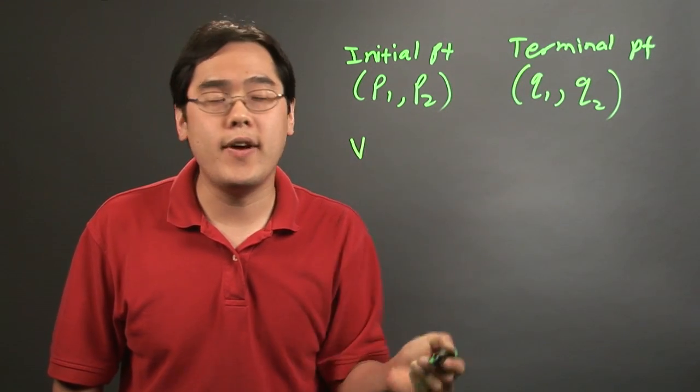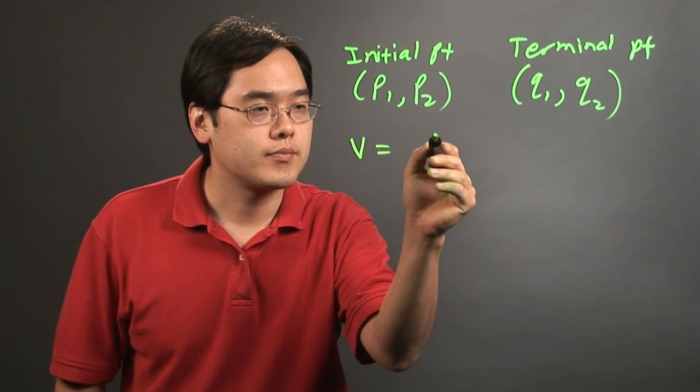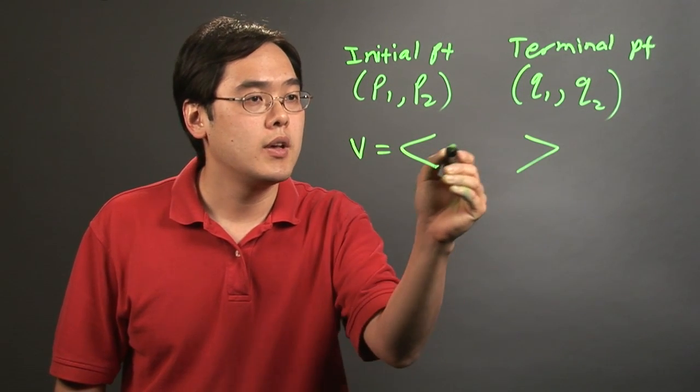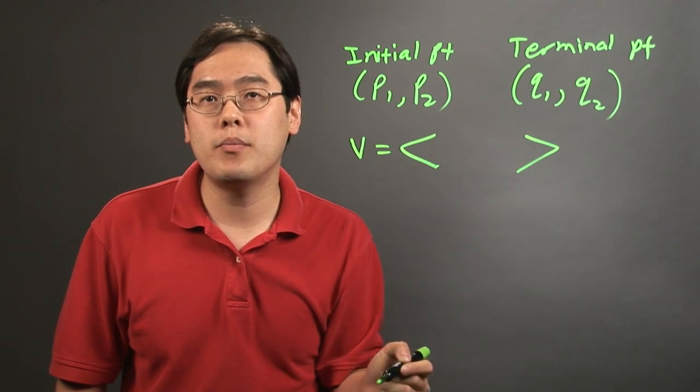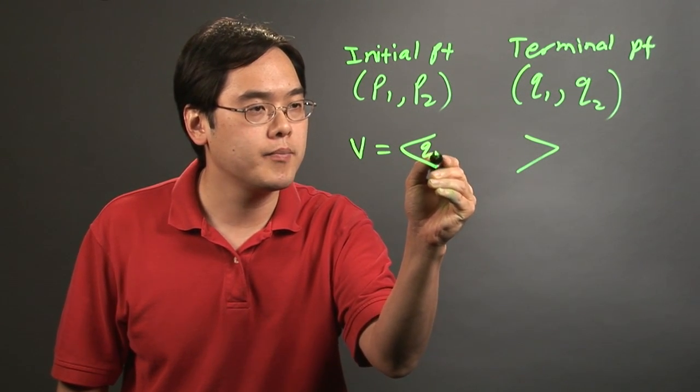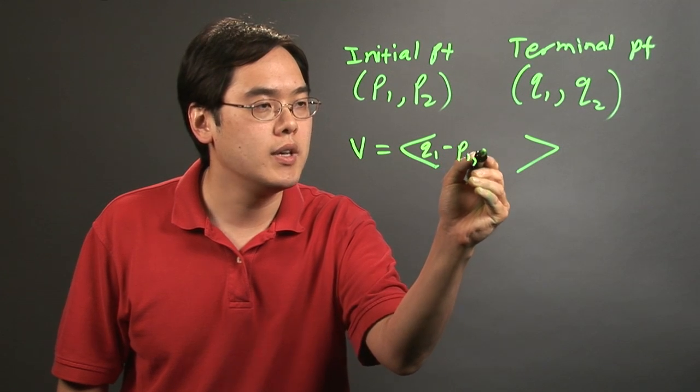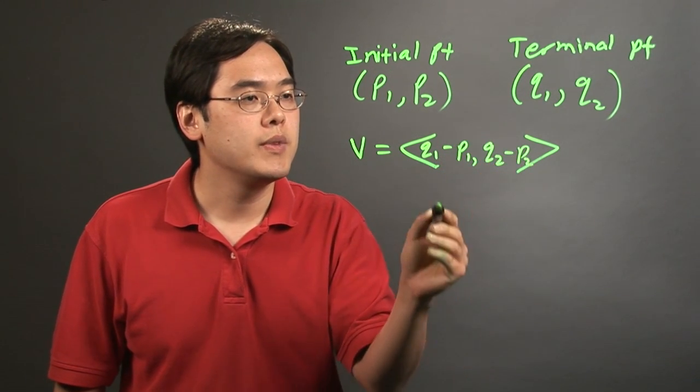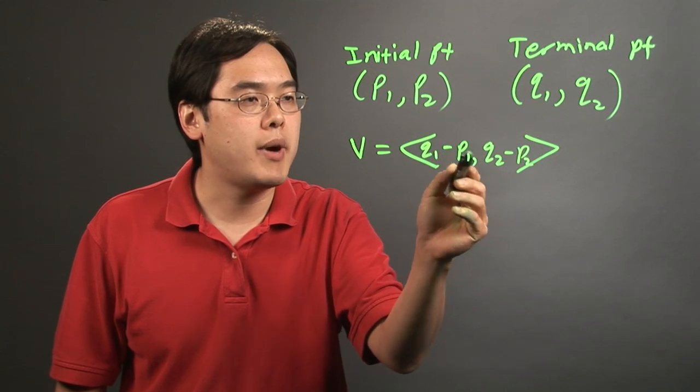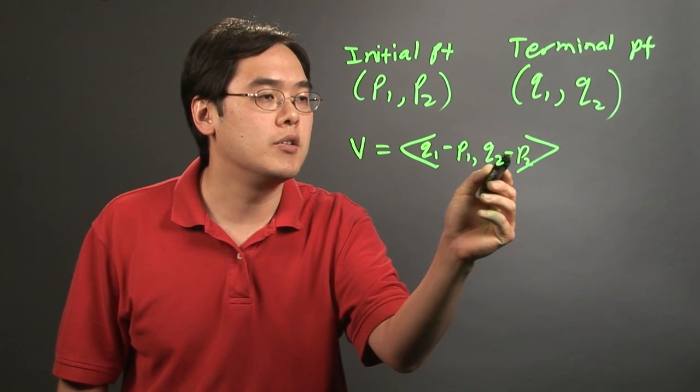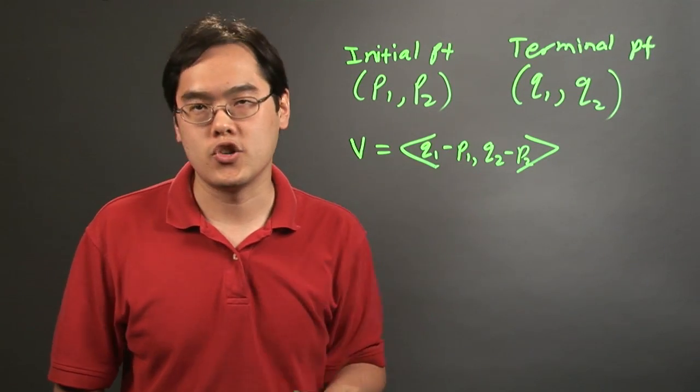Now, to calculate a vector using this, and this is what's called component notation, it's always the terminal numbers minus the initial numbers. So the first component is Q1 minus P1 and Q2 minus P2. So it's the x-coordinate of the terminal minus the x-coordinate of the initial, and then the y-coordinate of the terminal minus the y-coordinate of the initial.